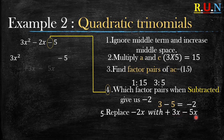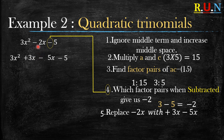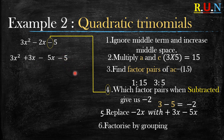Given that positive 3 and negative 5 are the pairs that give us negative 2, we replace negative 2x with positive 3x minus 5x. Because positive 3 minus 5 equals negative 2, this positive 3x minus 5x is the same as negative 2x. Now we have four terms, so we factorize by grouping.